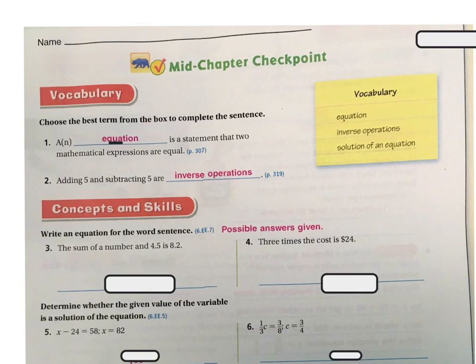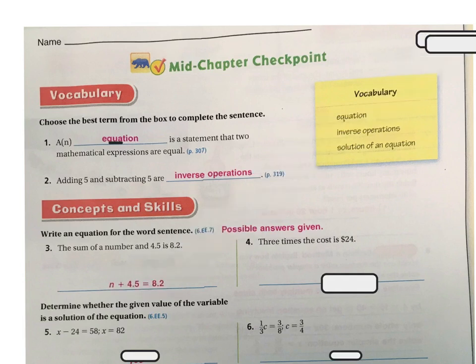Concepts and skills: write an equation for the word sentence. The sum of a number and 4.5 is 8.2. So the sum means we're adding, and the number is going to be N. So we're going to have 4.5 plus N, and that's going to give us the 'is' — remember, 'is' is the equal sign. The next one says 3 times the cost is 24.